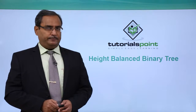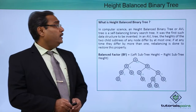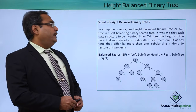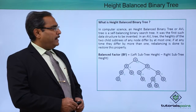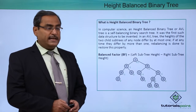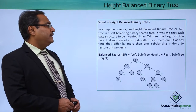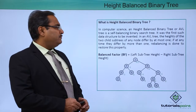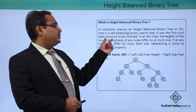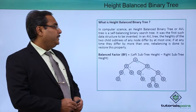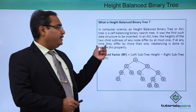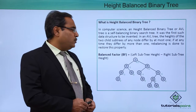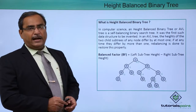Height balanced binary tree. In computer science, a height balanced binary tree, also called an AVL tree, is a self-balancing binary search tree. It was the first such data structure to be invented. In an AVL tree, the heights of the two child subtrees of any node differ by at most one.